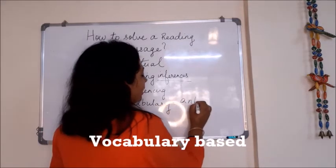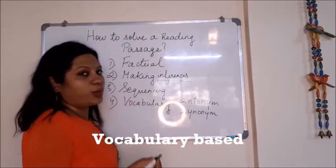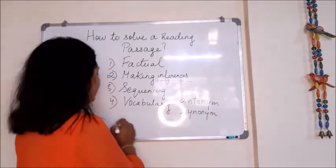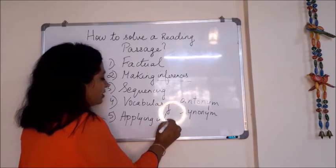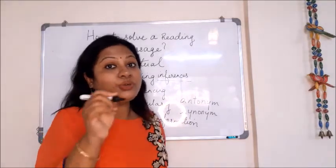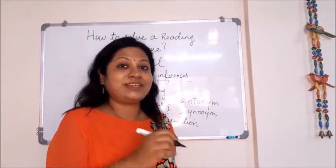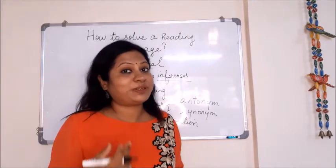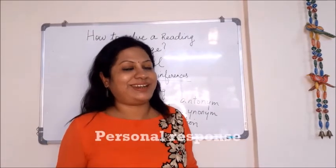Next is vocabulary-based questions, where you can be asked to write the antonym — the opposite — or the synonym — a similar-meaning word. One more type is applying information, also known as personal response questions. Examples include: 'What do you think about this particular problem?', 'How would you tackle it?', or 'Do you think this is correct — yes or no? Justify your answer.' These questions apply the passage information to yourself and check your understanding.